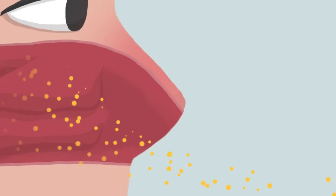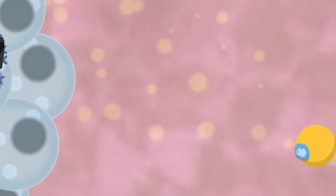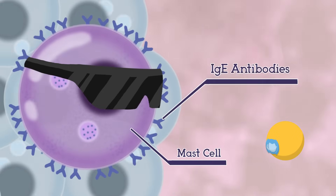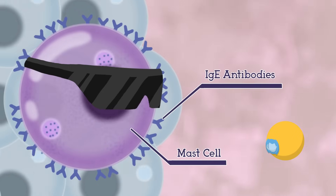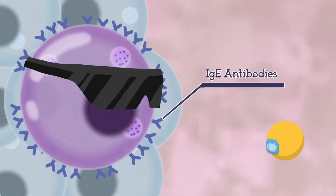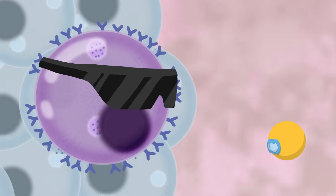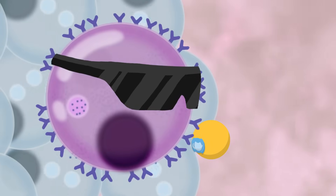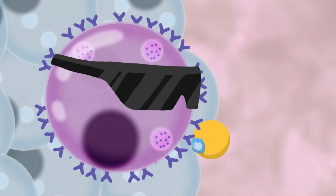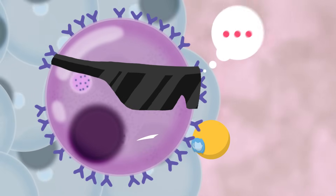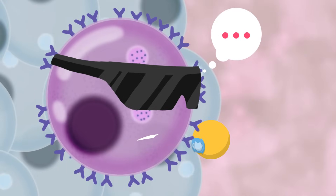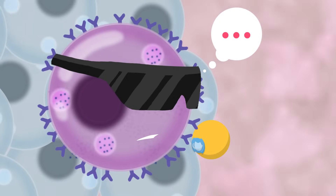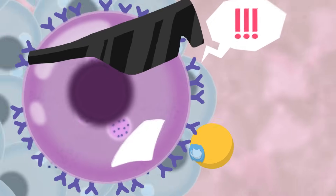Once inside the nose, they will meet the immune system, particularly mast cells attached to IgE antibodies. The allergen will bind to the IgE antibody, which will then activate and alert mast cells. In a normal person, the reaction is minimal, but in those suffering from allergic rhinitis, this cell overreacts big time.